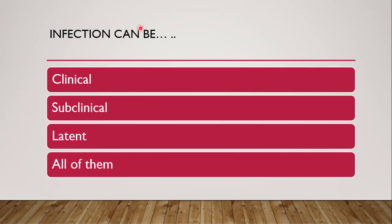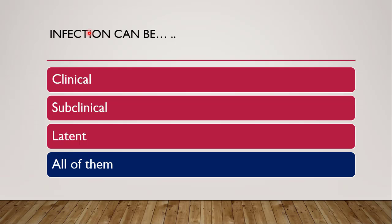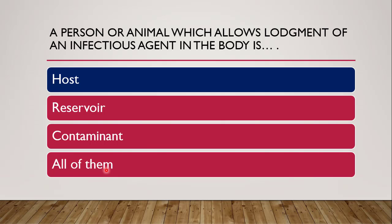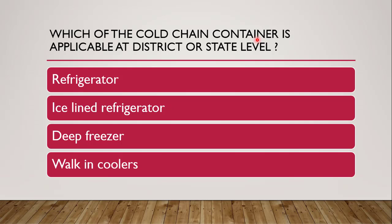Next question: infection can be — whether it can be clinical, subclinical, or latent, or all of them. The correct answer is all of them — an infection can be clinical, subclinical, and latent. Next question: a person or animal which allows lodgment of an infectious agent in the body — whether it is host, reservoir, contaminant, or all of them. The correct answer is host. The host is the person or animal responsible for lodging the infectious agent inside the body.